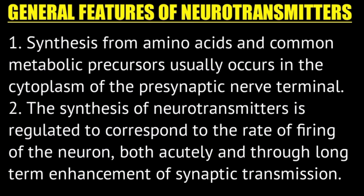General features of neurotransmitters: synthesis occurs from amino acids and common metabolic precursors, usually in the cytoplasm of the presynaptic nerve terminal. The non-essential amino acids required for neurotransmitter production are synthesized by the body. Synthesis rate is regulated to correspond to the rate of neuronal firing.